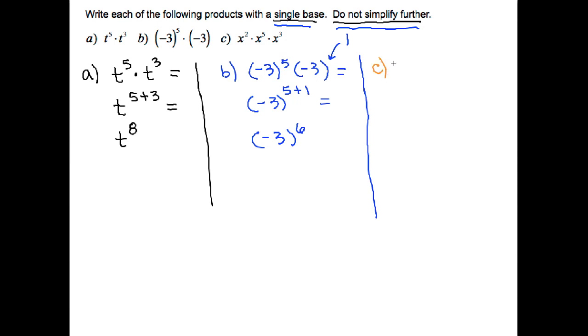Lastly, we have three bases, all the same. We have x squared times x to the fifth times x cubed, but because they're all the same base, I can add the exponents. So that's x to the 2 plus 5 plus 3, and that would be x to the tenth.